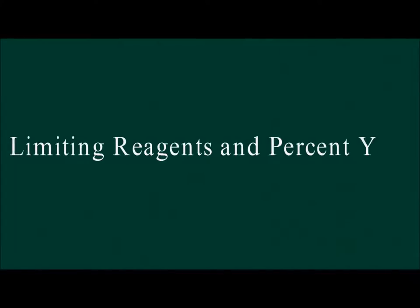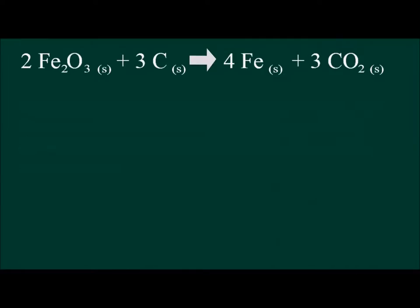This video explains how to calculate the limiting reagent and percent yield of a chemical reaction. We will be looking at the reaction between hematite and carbon.